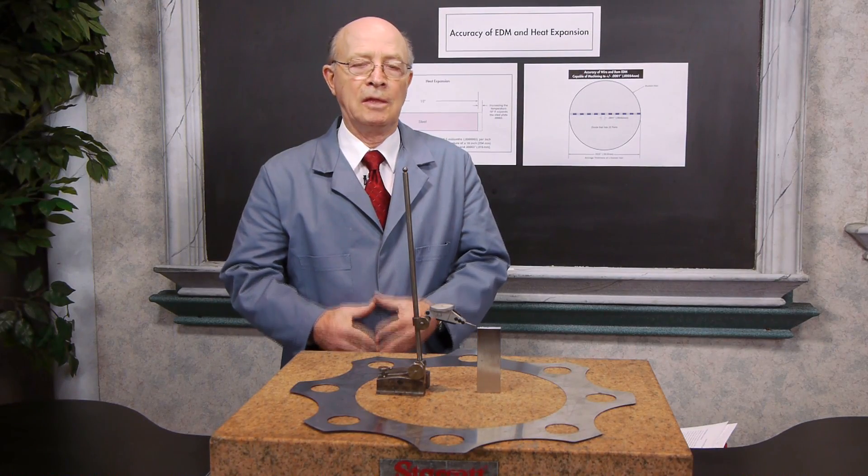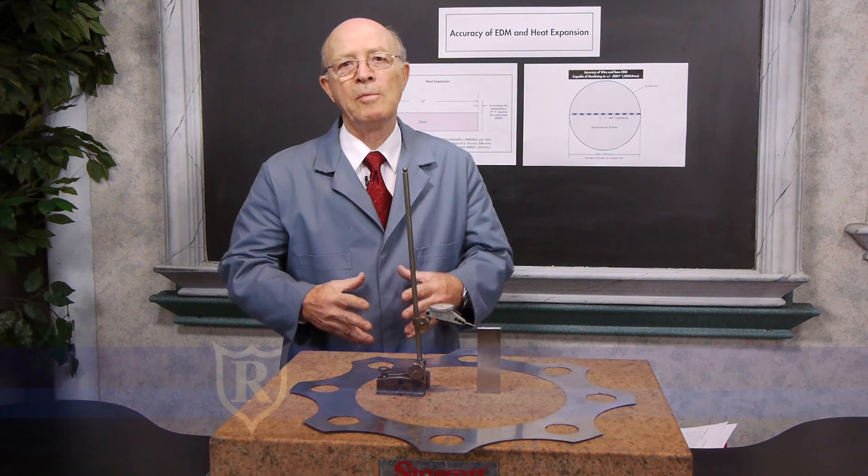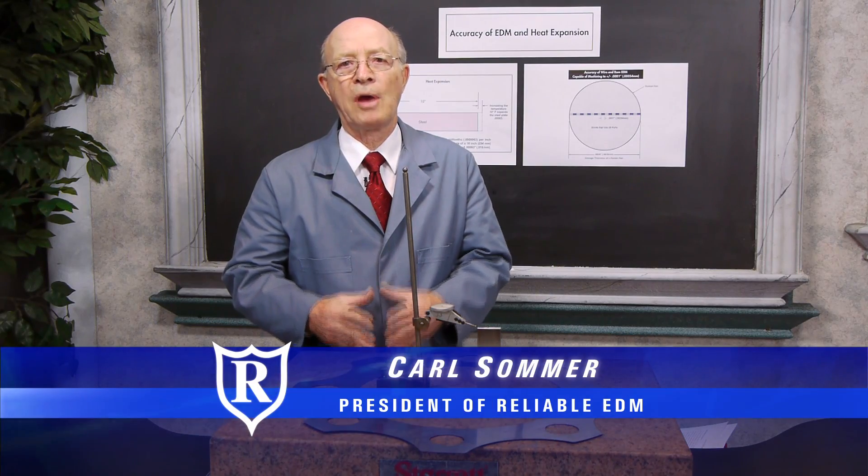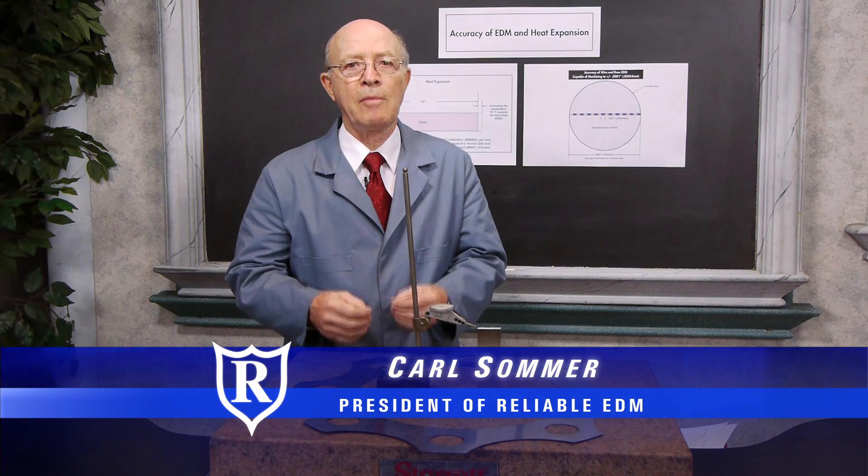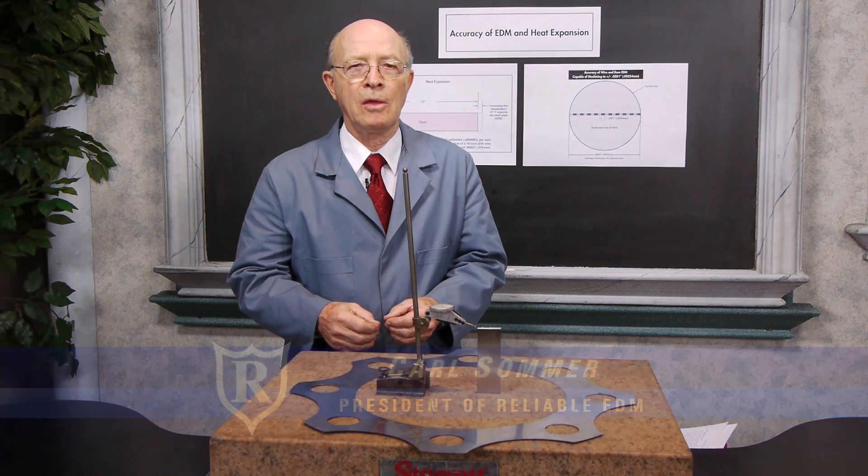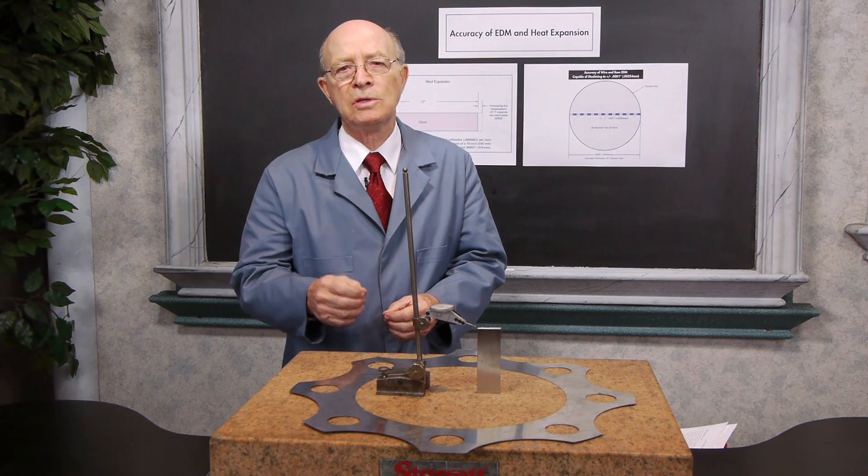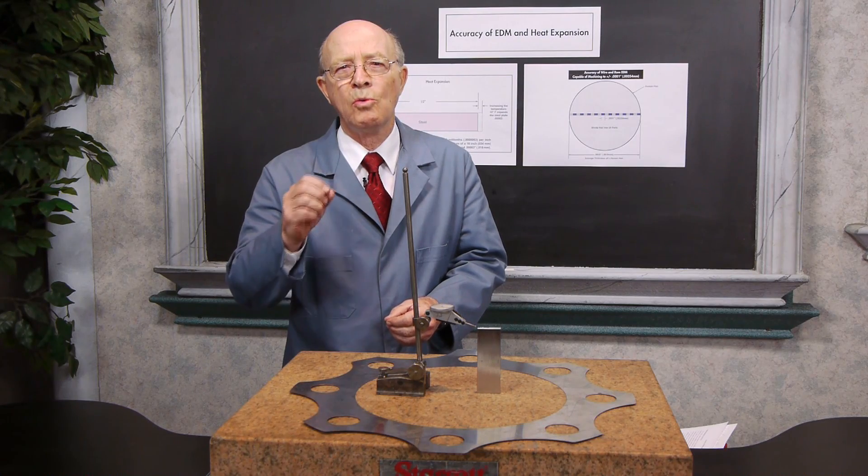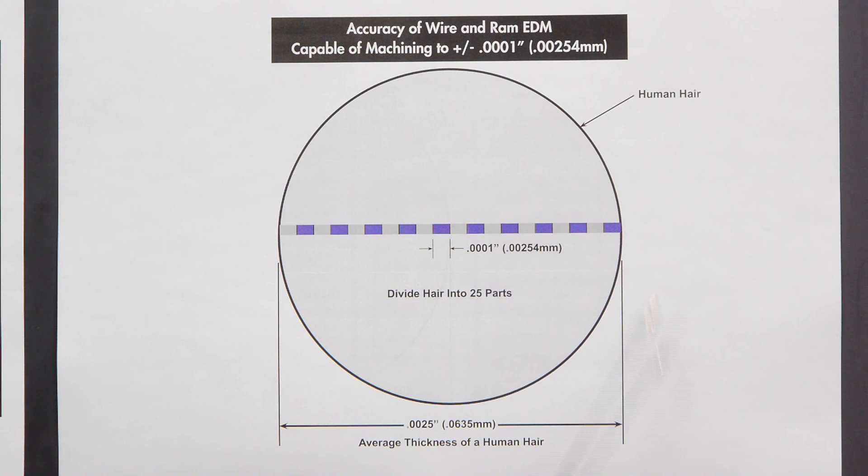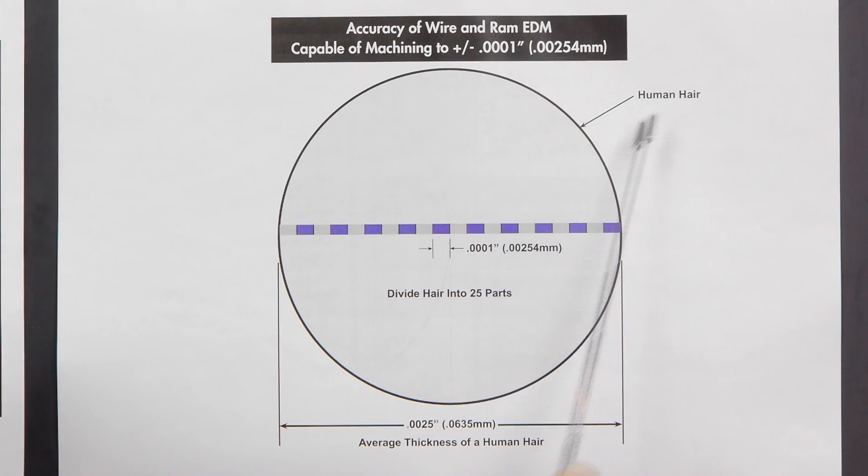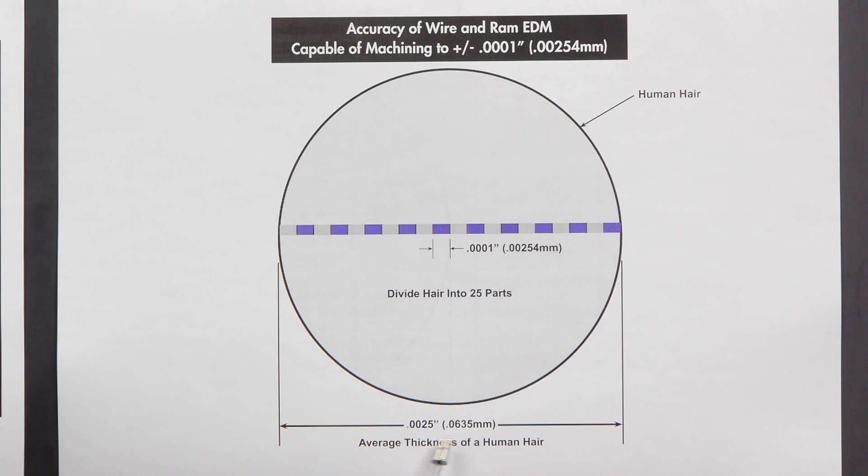Accuracy of EDM and heat expansion. One of the amazing features of the EDM process is the extreme accuracy that we can get with RAM and wire EDM. We can cut to accuracies of plus or minus one-tenth of a thousand. Let's take a look at this diagram. This is a diagram of a human hair. Average thickness of a human hair is .0025, that's two and a half thousandths.